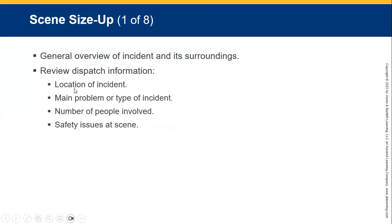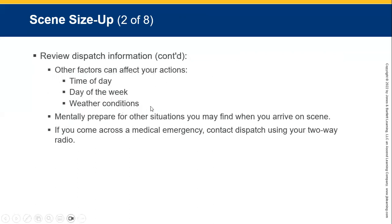Dispatch information: we obviously need the location of the incident, the main type of problem, the chief complaint, the number of people involved, and safety issues at the scene of the incident, injury, or illness.